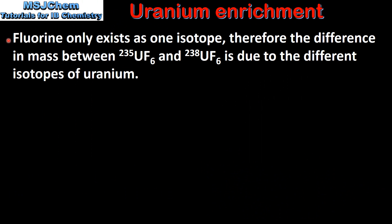Fluorine only exists as one isotope, therefore the difference in mass between uranium-235 hexafluoride and uranium-238 hexafluoride is due to the different isotopes of uranium.